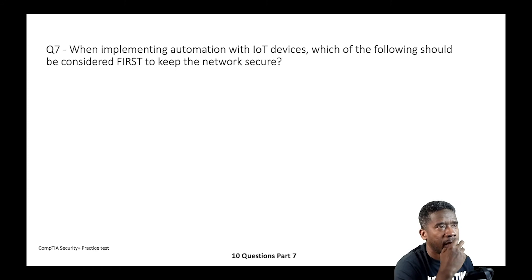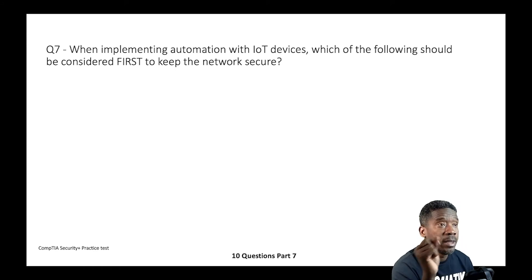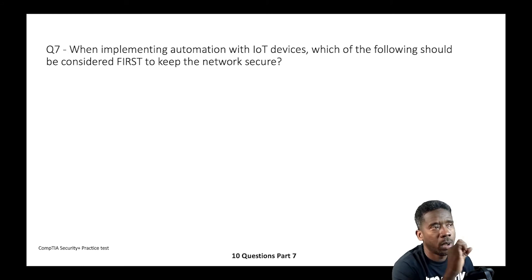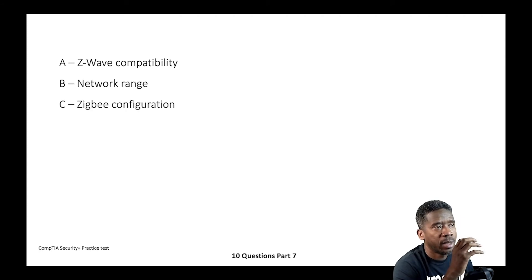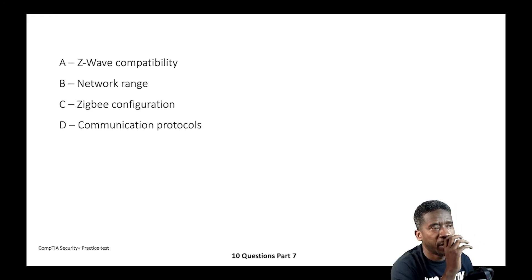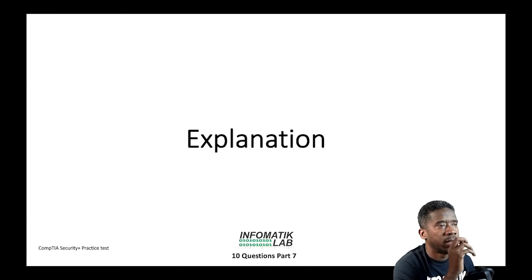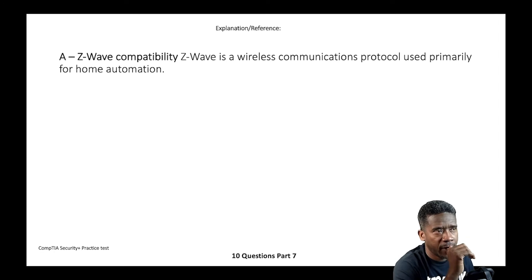Question seven: When implementing automation with IoT devices, which of the following should be considered first to keep the network secure? A) Z-Wave compatibility, B) Network range, C) Zigbee configuration, or D) Communication protocols.